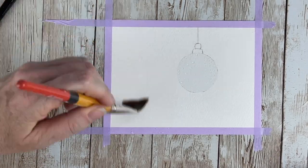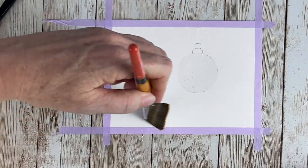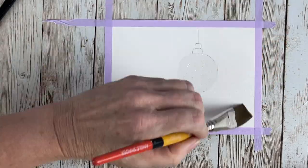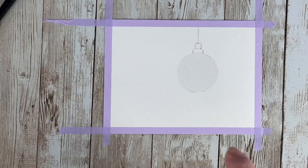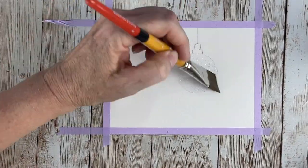This little ornament is very fast and easy to do. Starting off, I had masked the bulb with contact adhesive paper and I'm wetting the background. We're going to work wet on wet for the background.